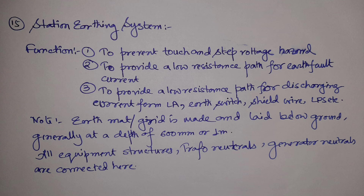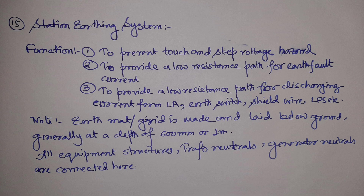A separate detailed video on the earthing system and earthing design is available on this channel. Briefly, an earth mat or grid is made and laid below the ground, generally at a depth of 600 mm to one meter. All equipment structures, transformer neutrals, and generator neutrals are connected to the earthing grid. The grid design criteria address touch and step potential hazards as well as short-circuit current levels.